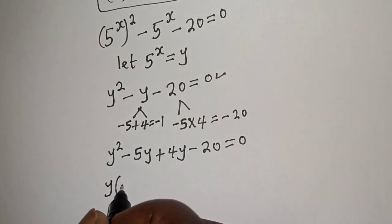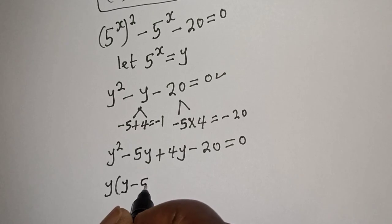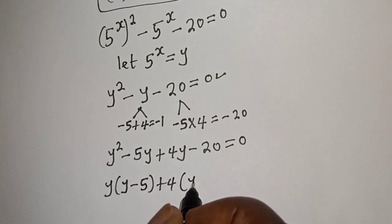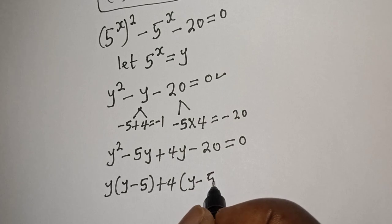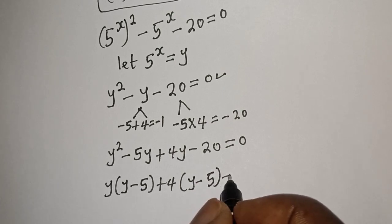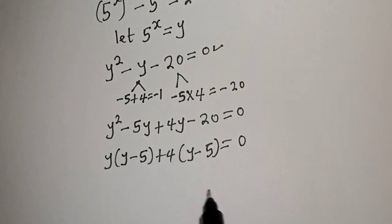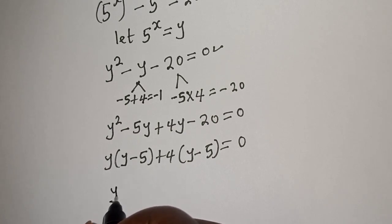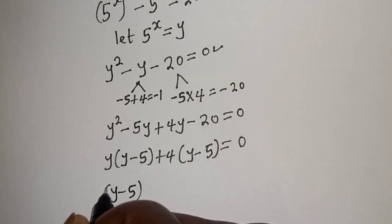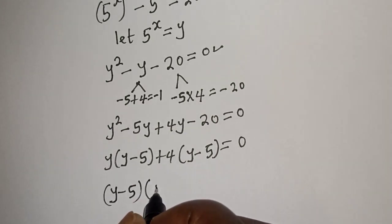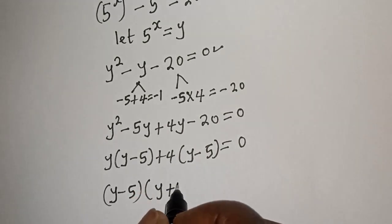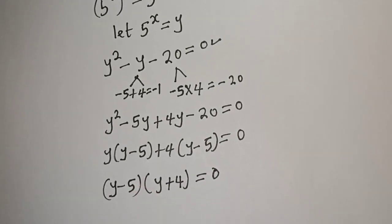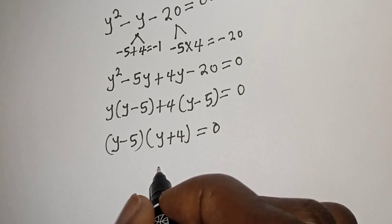Factoring: y bracket y minus 5, with y minus 5 as common factor. Bringing it out, we have y minus 5 bracket y plus 4 is equal to zero. There are two cases here.